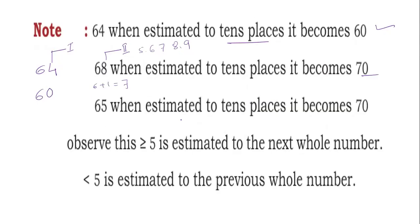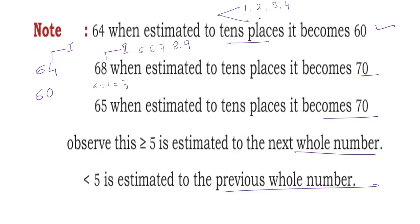65 estimated to the tens place also becomes 70. Observe: greater than or equal to 5 is estimated to the next whole ten. Less than 5 is estimated to the previous whole ten. So digits 1, 2, 3, 4 round down and digits 5, 6, 7, 8, 9 round up.